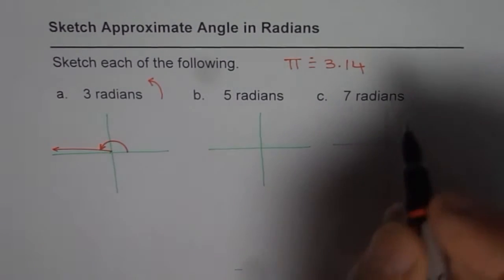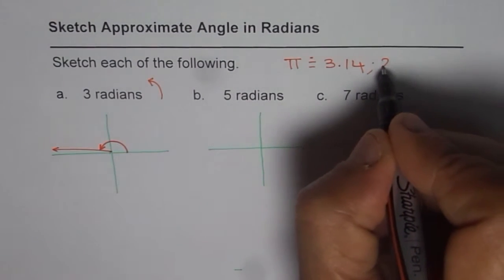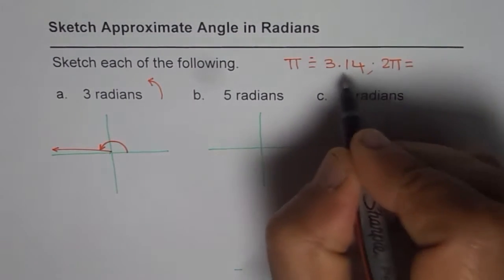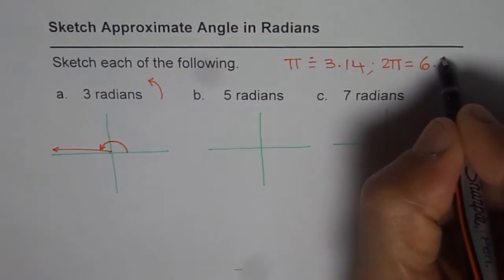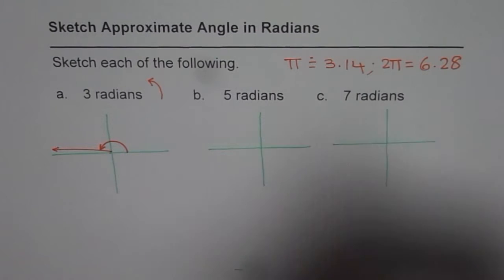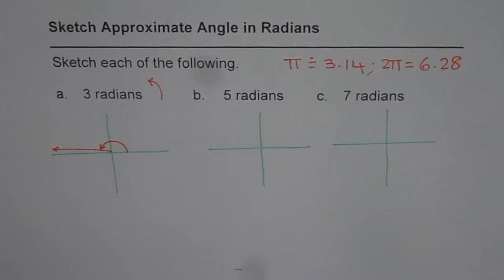Now if π is 3.14 then what is 2π? 2π will be 6.28 right. These values will help us figure out how much this angle is in terms of π.